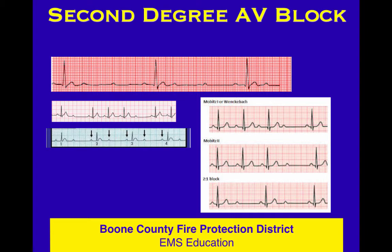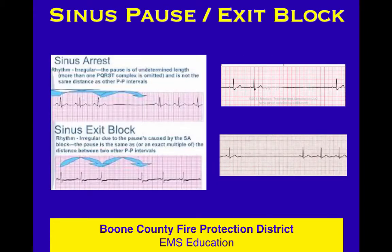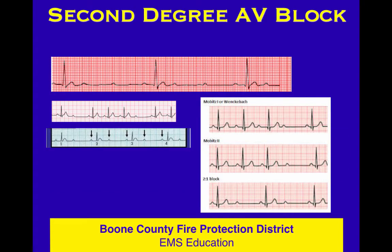We'll talk about type one, type two, two-to-one, high-grade block — there are all kinds of flavors of second degree AV block. But the concept here is that there are dropped beats in the world. There are really three types: one where there is just a complete pause with no P wave dropped — just a missing space where one or more beats should have happened; one where the P wave gets eaten by the AV node, producing a second degree AV block; and a third type coming up next.